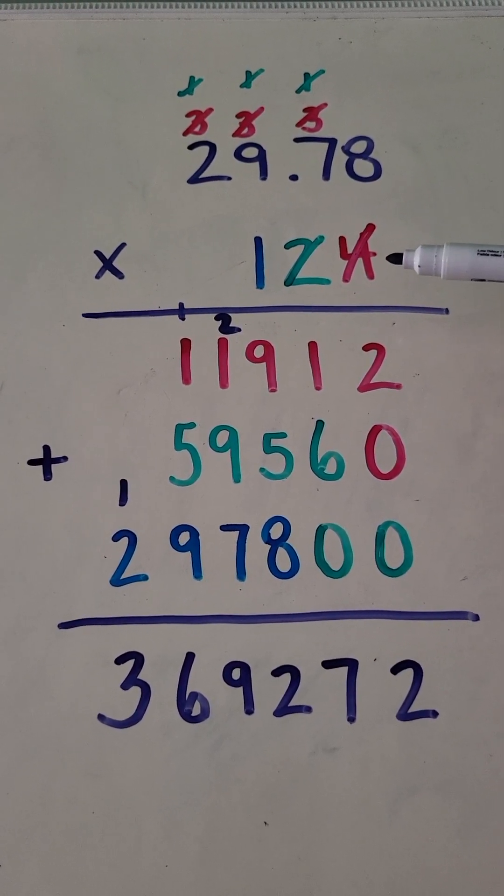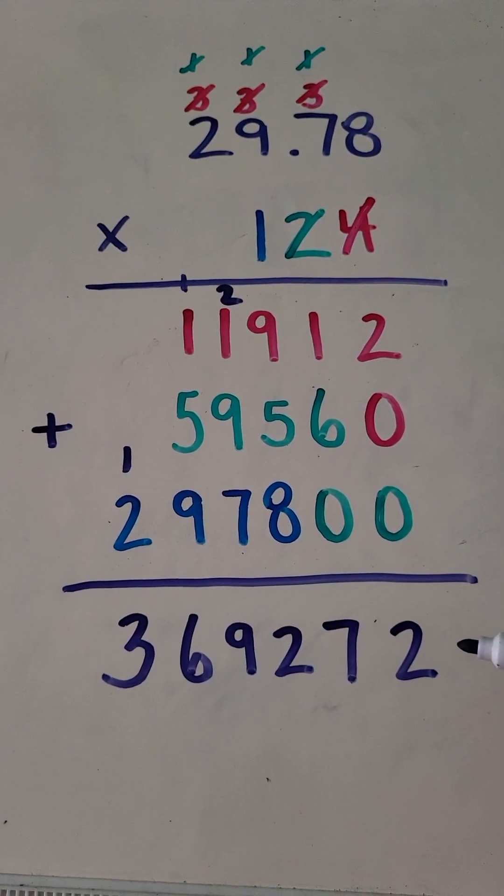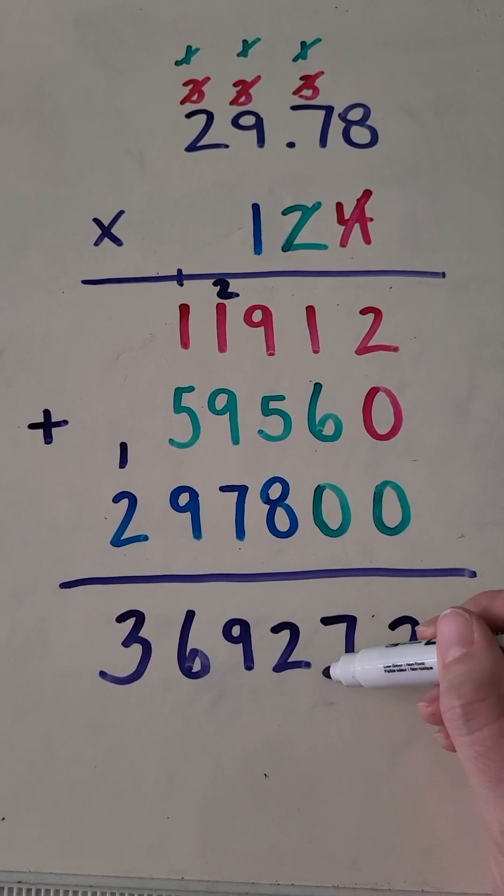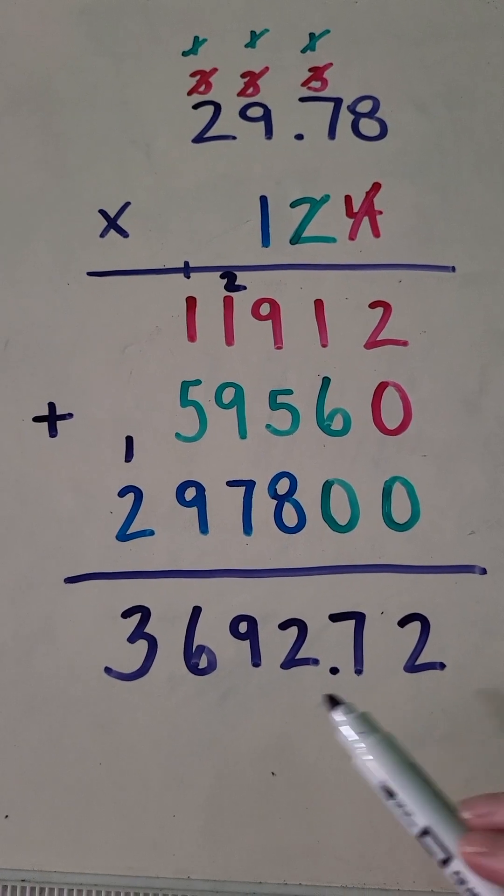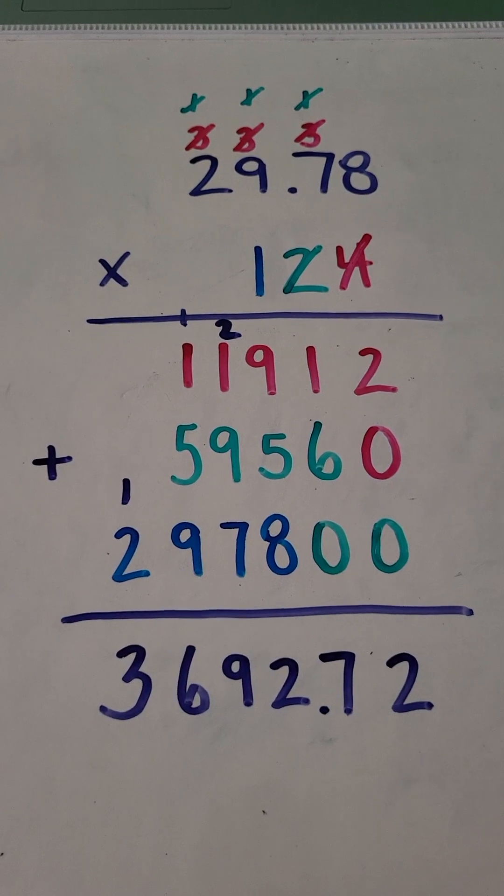So this number has two decimal places. This number has none. So two decimal places in the question, two decimal places in the answer, 1, 2. So the answer here is 3,692 and 72 hundredths.